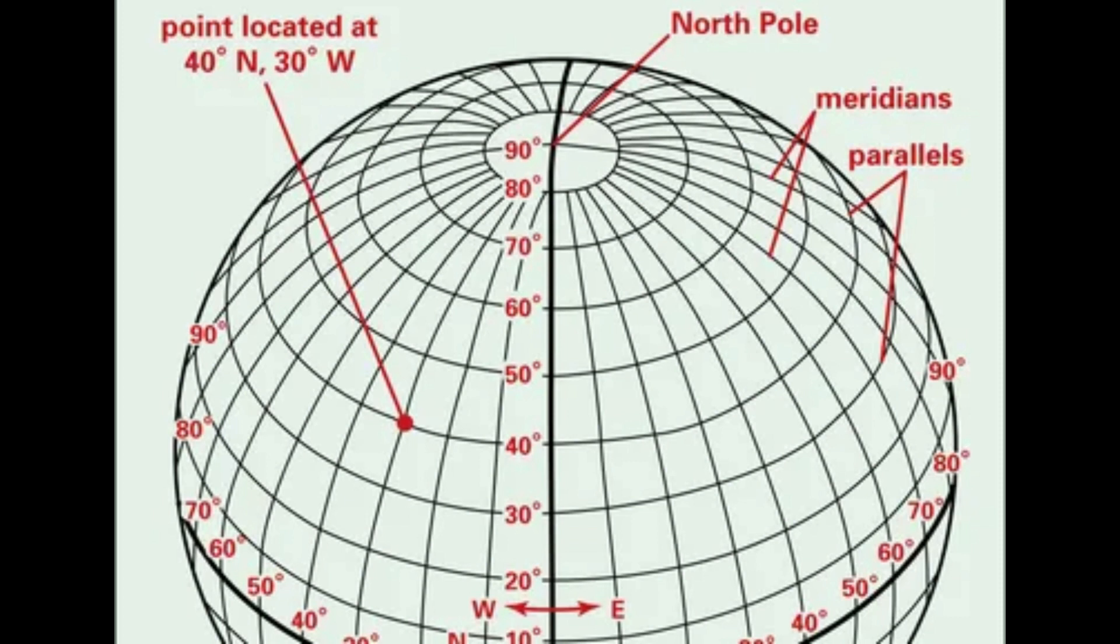You will notice that the 90 degree line of latitude is represented by a dot at the North Pole. All lines of latitude above the equator are indicated with the letter N to denote north of the equator. Therefore, we have 15 degrees north, 30 degrees north, 45 degrees north, and so on.